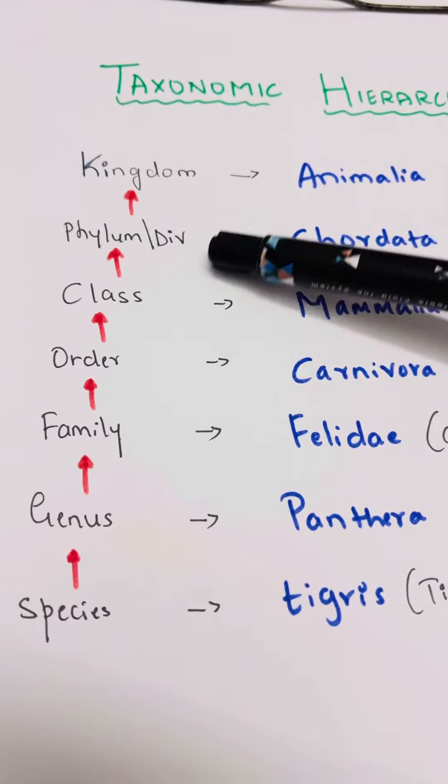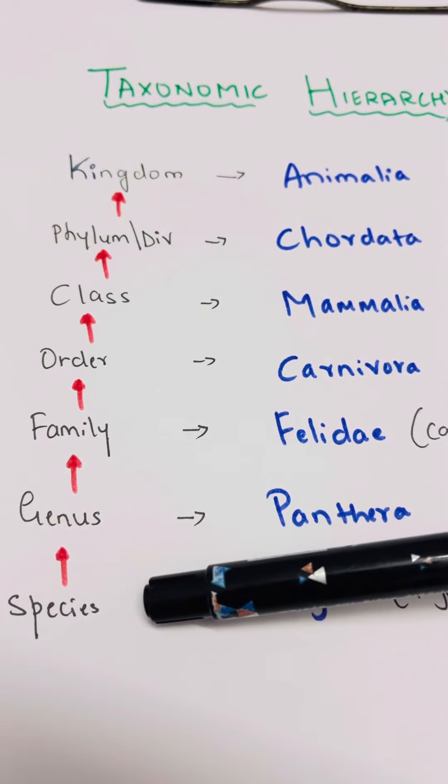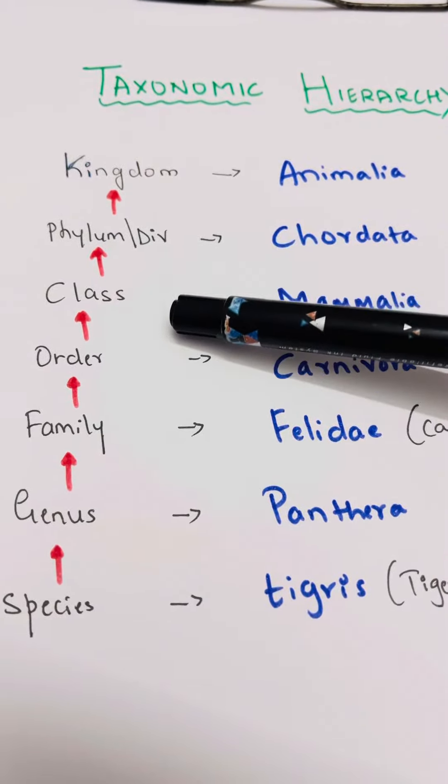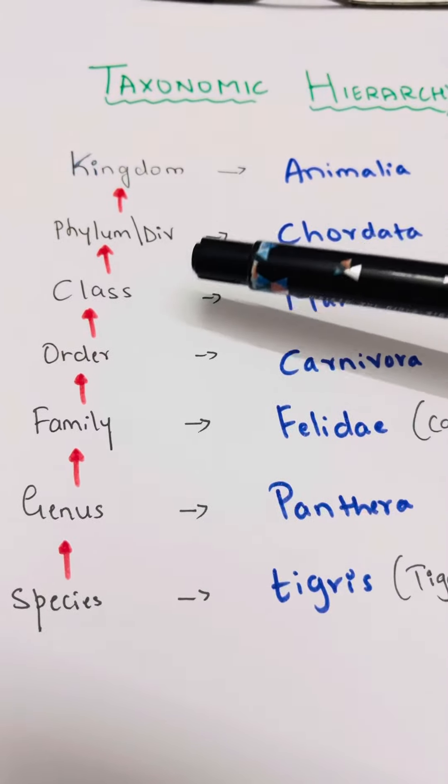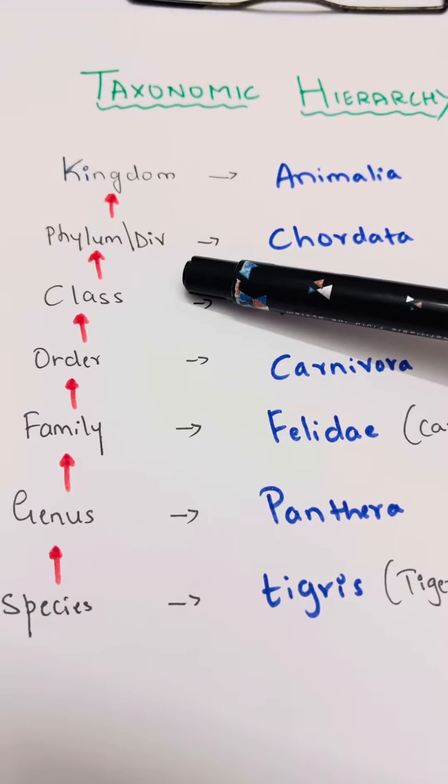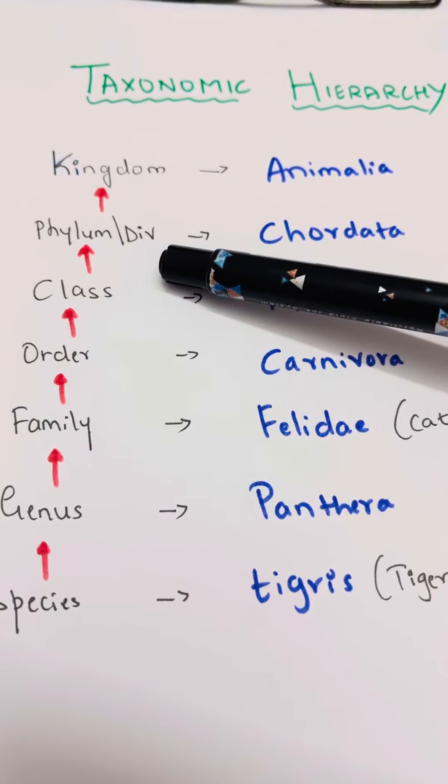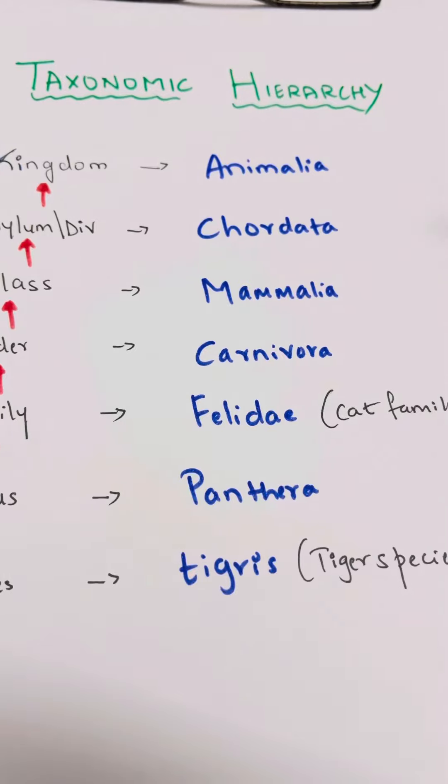These are seven taxonomic categories: kingdom, phylum, class, order, family, genus, and species. I will turn a division children. For animals we use phylum, and for plants we use division. Thank you.